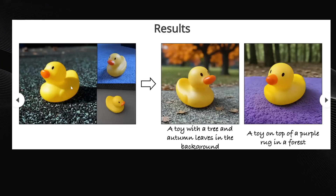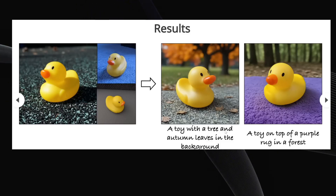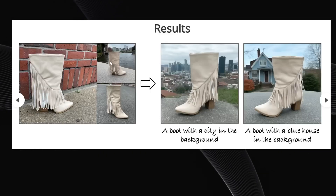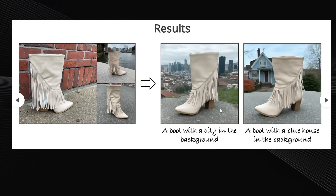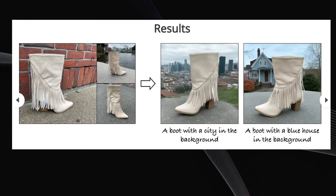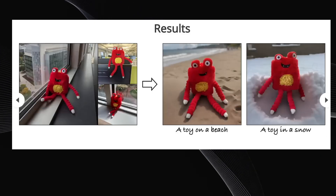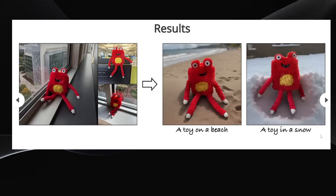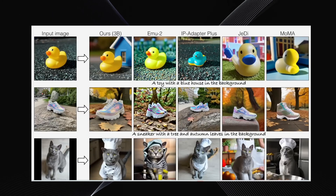Here's another example: reference images of a duck shown from different angles and in different lighting conditions. Prompt it with 'a toy with a tree and autumn leaves in the background' and that is exactly what it generates. Or 'a toy on top of a purple rug in a forest' — the results are consistent. You can even upload reference images of a boot, then prompt it with 'a boot with a city in the background' or 'a boot with a blue house in the background.' The generated images feature the same boot, accurately rendered in the new context. This is incredibly useful for product photography — you can skip the expensive photo shoot and just use SyncCD. You don't need multiple reference images, although it does improve accuracy. You can get good results with just one.